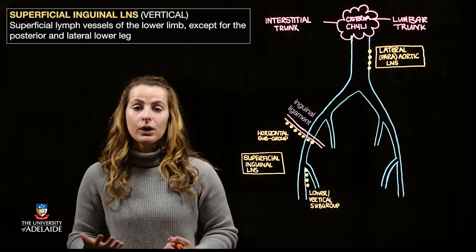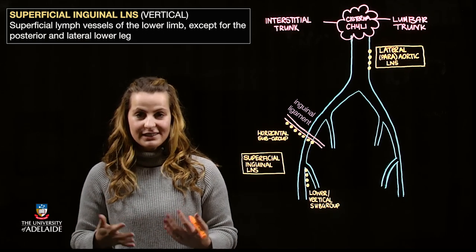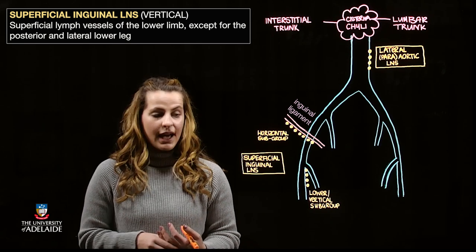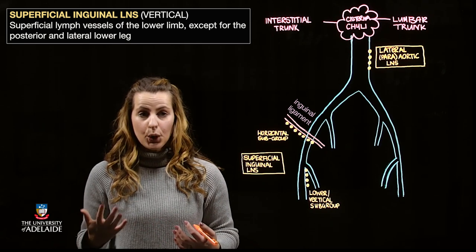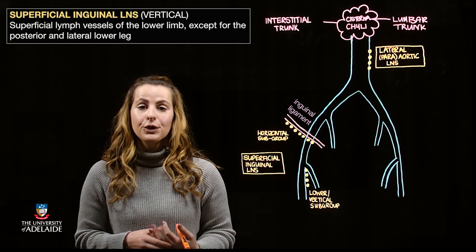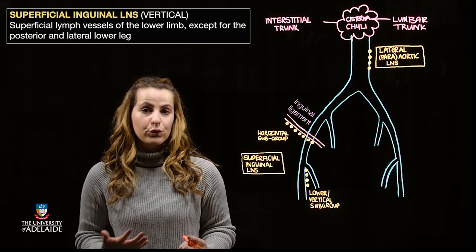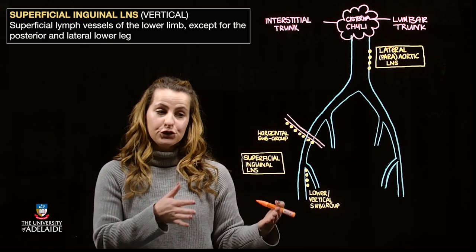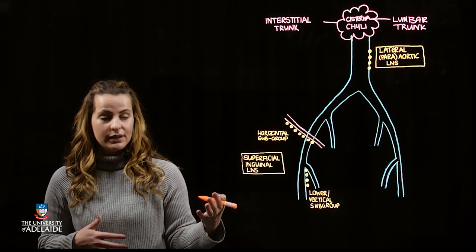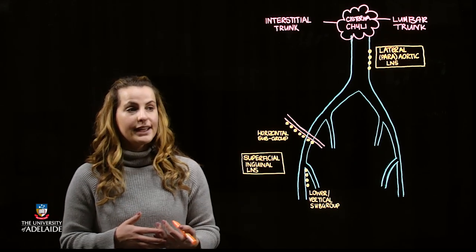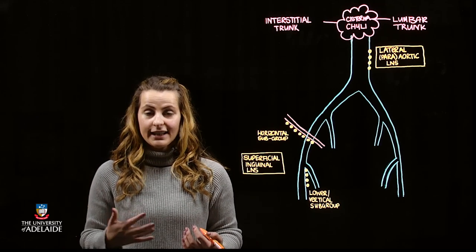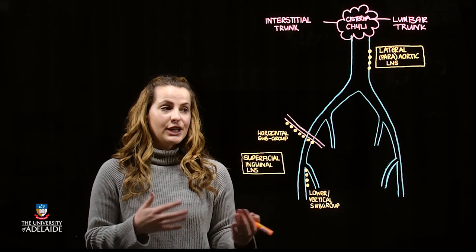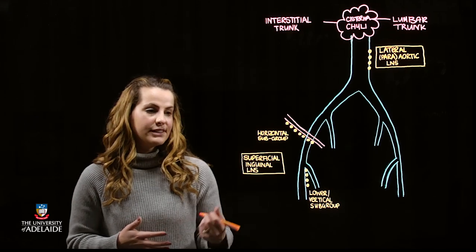The lower or vertical subgroup will receive drainage from the superficial vessels associated with the lower limb, with the exception of the posterior and lateral lower leg or calf. With respect to the efferent drainage of the superficial inguinal lymph nodes, these will then drain into the external iliac nodes, which are located on and adjacent to the external iliac blood vessels.